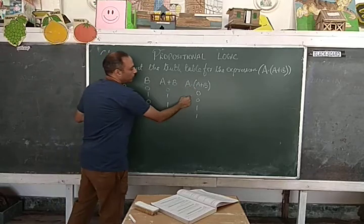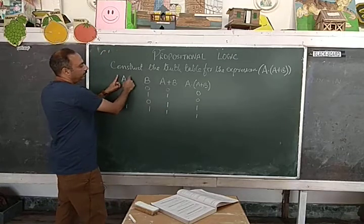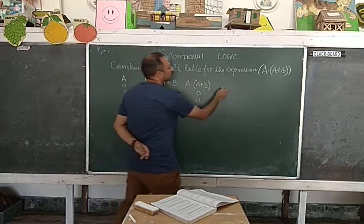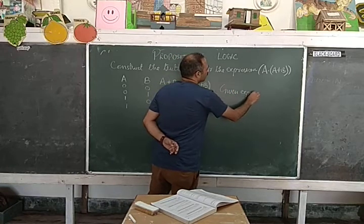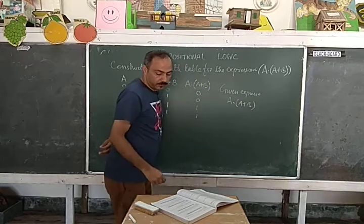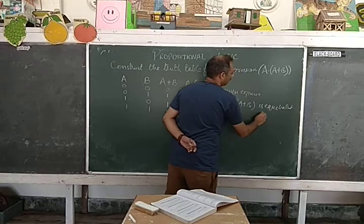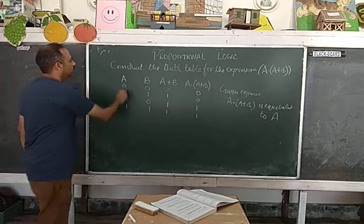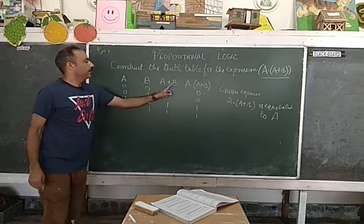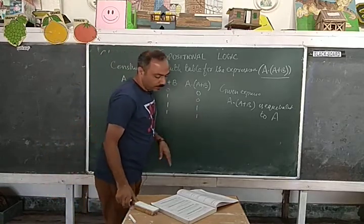In this case A is equivalent to A dot A plus B. This column and this column are identical, and A is equivalent to A plus B. So in the given expression, A and A plus B is equivalent to A. We have used the AND operator and OR operator and connectives. Now let us do the second example.